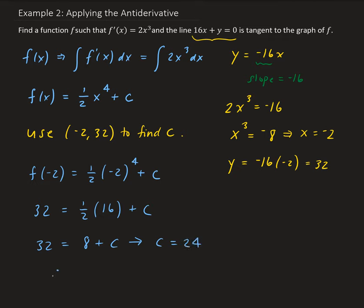Therefore, our function is going to be one half x to the 4 plus 24. That is the function that we need, given that the line 16x plus y equals 0 is tangent to this function.